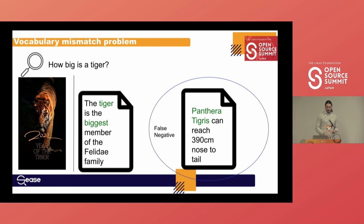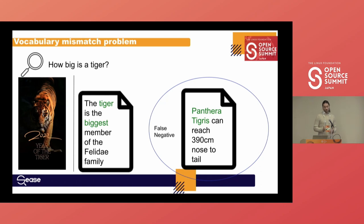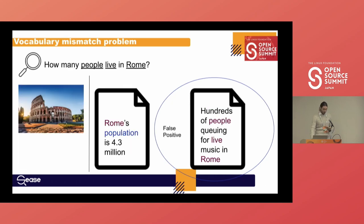Another example: for the query 'how big is a tiger?', stemming can help match 'big' and 'biggest', but you may miss a highly relevant document stating 'Panthera tigris can reach 390 centimeters nose to tail.' This is a false negative because Panthera tigris is the Latin scientific name for tiger, and a lexical search engine may not know they refer to the same animal. So in the first example you get a false positive, and in this case you get a false negative.